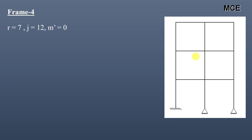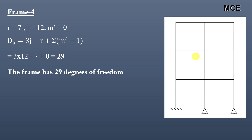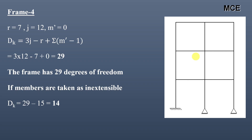For frame 4, this frame has 7 reactions, 12 joints, and no internal hinge, so m′ = 0. The value of DK is equal to 29, meaning this frame has 29 degrees of freedom. If members are taken as inextensible, this frame has 15 members, so DK = 29 − 15 = 14.